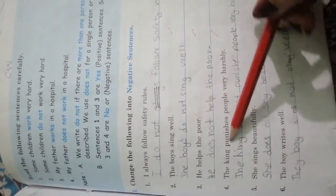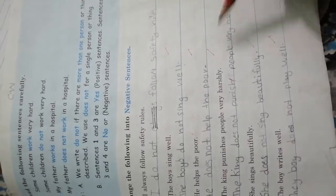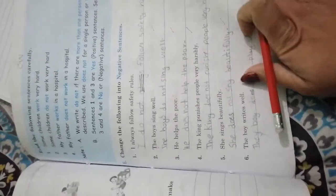The king punishes people very harshly becomes the king does not punish people very harshly. She sings beautifully becomes she does not sing beautifully. The boy writes well becomes the boy does not write well.